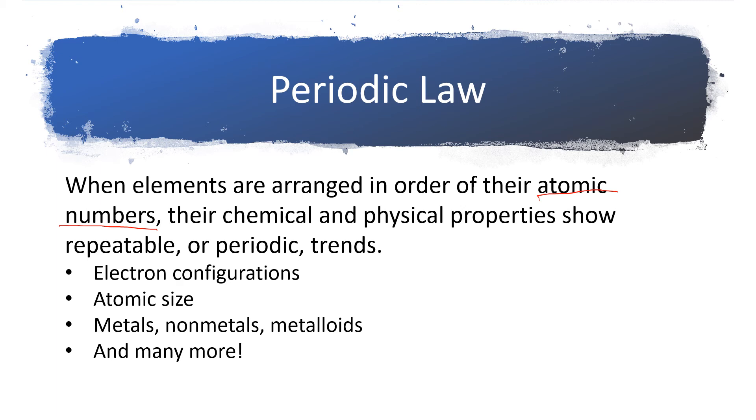And those were the elements where Mendeleev said, no, I think you don't know the masses accurately. Go back into the lab and try to remeasure them. And I think you're going to find that the masses are different. Well, as it turns out, the mass numbers that they were working with were good. It's just masses aren't the ordering principle. It is actually atomic number.